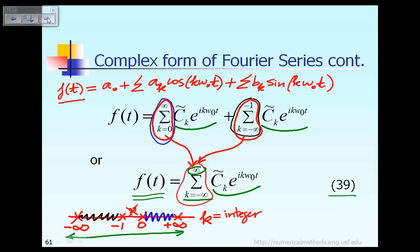In equation 39, the constant C̃_k is a complex number. Just as in the traditional approach we had to determine a₀, a_k, and b_k, in equation 39 we must determine the value of the complex constant C̃_k. Finding C̃_k is not too difficult — all we have to do is go back to its definition from the earlier slides.